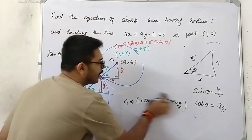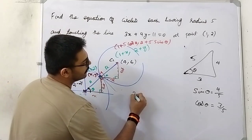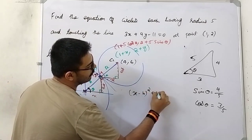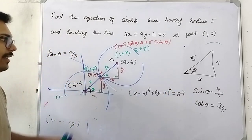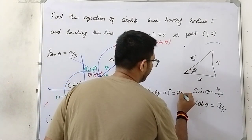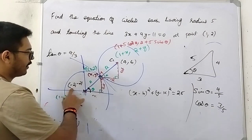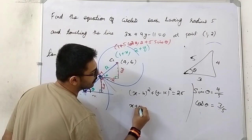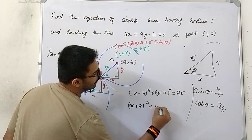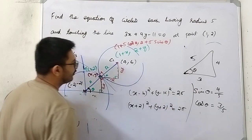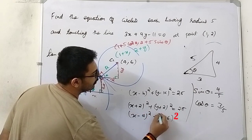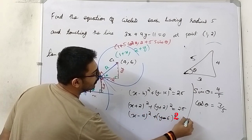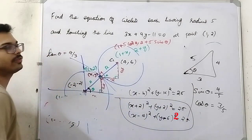Now how will you find the equation? Using (x − h)² + (y − k)² = r², the general formula for a circle with center (h, k), and with radius 5, r² = 25. Substituting center (−2, −2): (x + 2)² + (y + 2)² = 25. Similarly, substituting center (4, 6): (x − 4)² + (y − 6)² = 25. This is how you get the equations of the two circles.